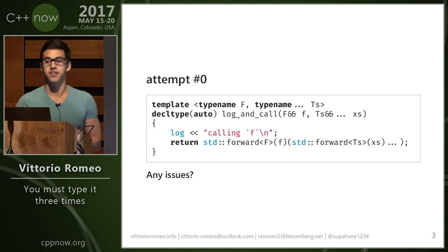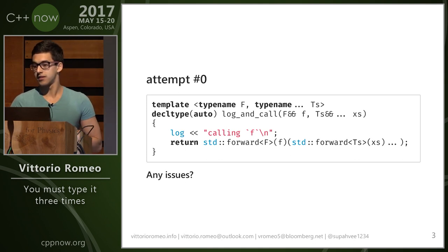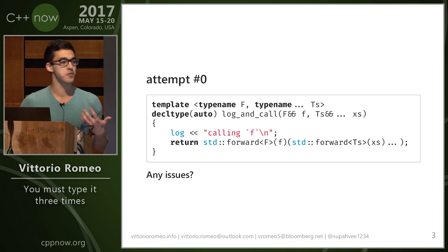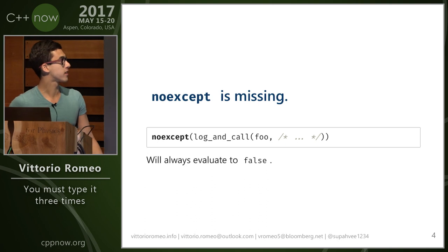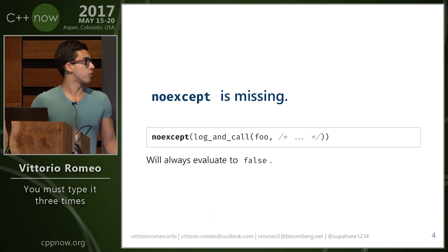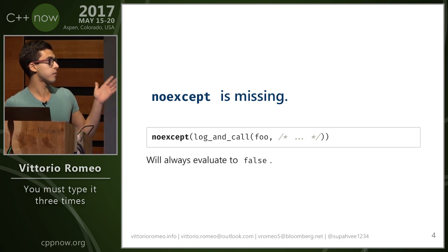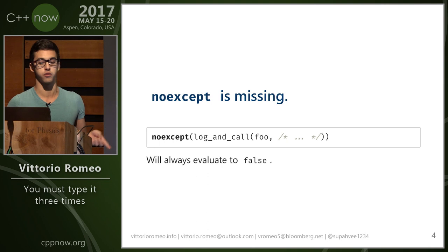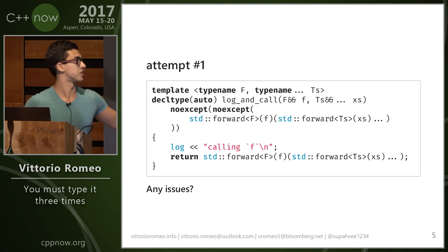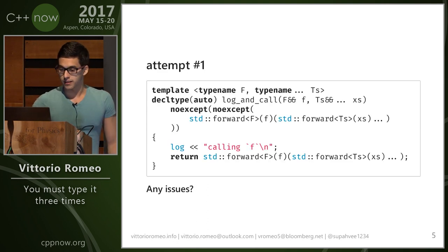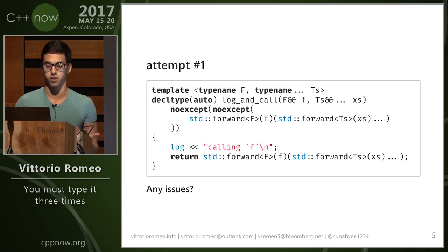What are the issues here? We don't have noexcept. So if we try to check the noexcept-ness of this function, it will always evaluate to false. So what we need to do is write the same function code with the same arguments inside a noexcept block.